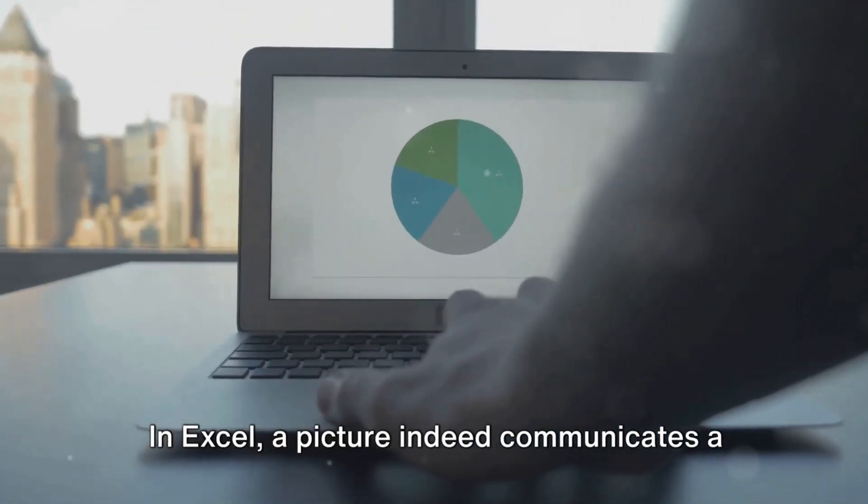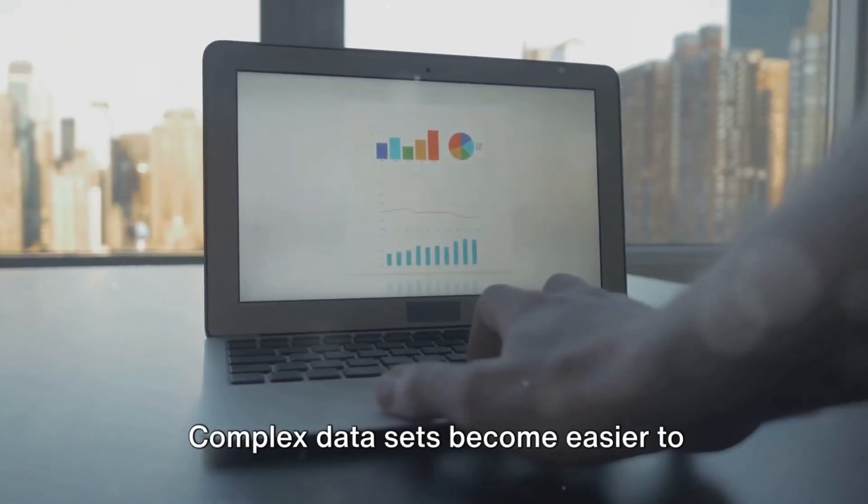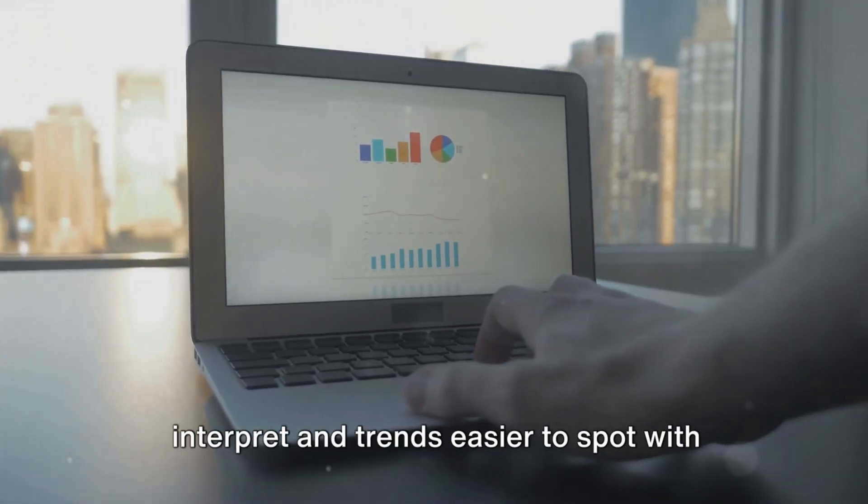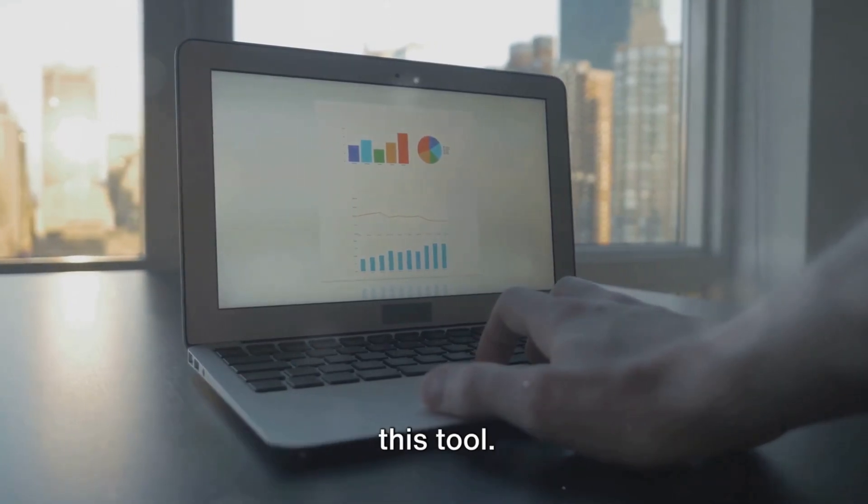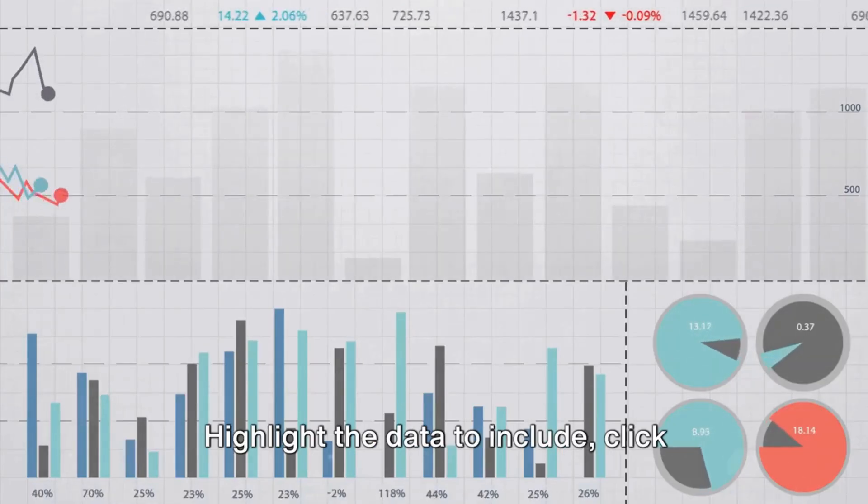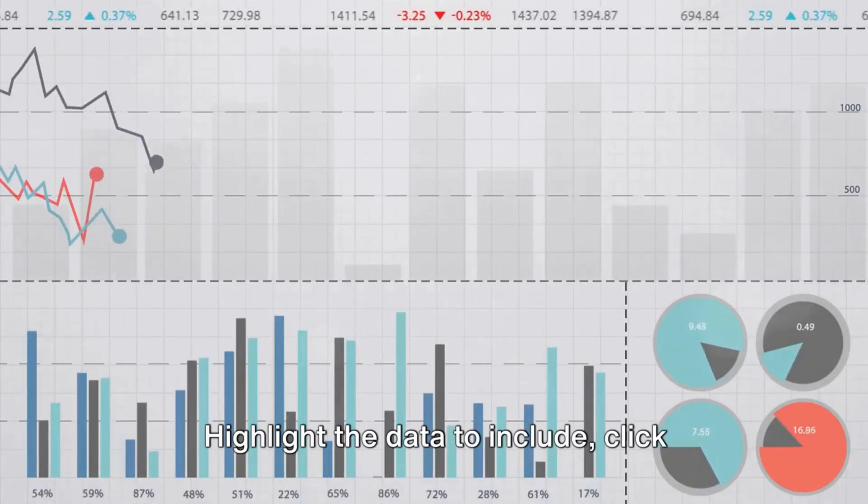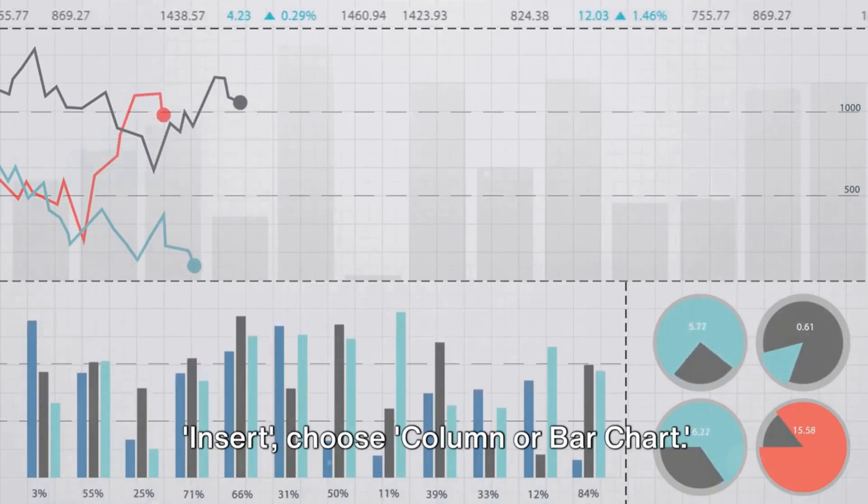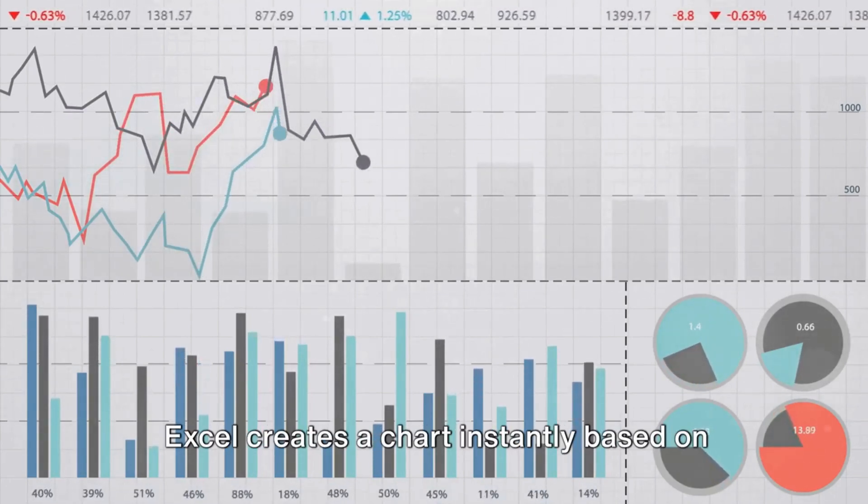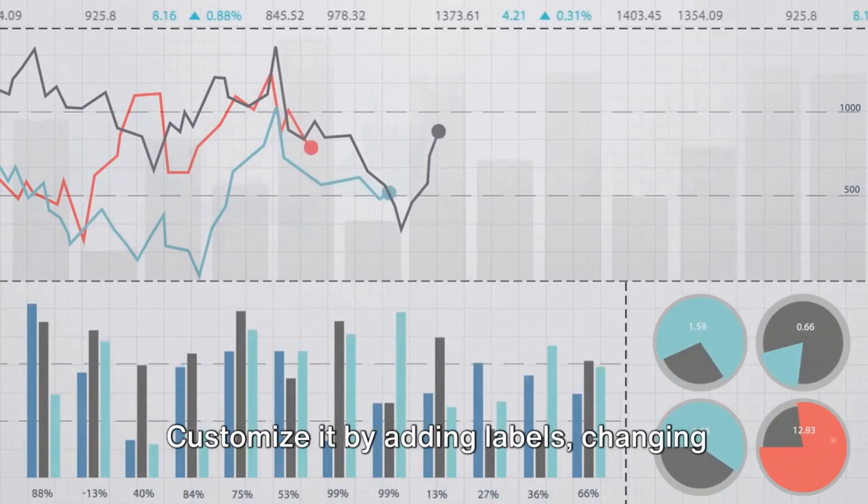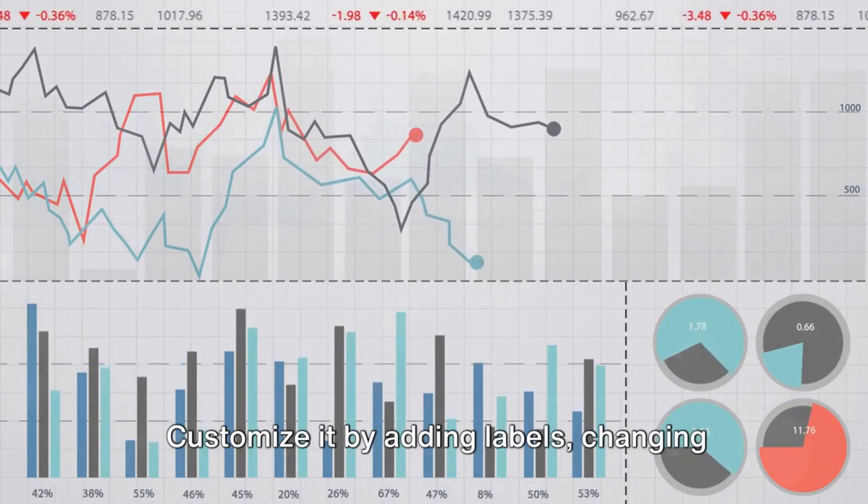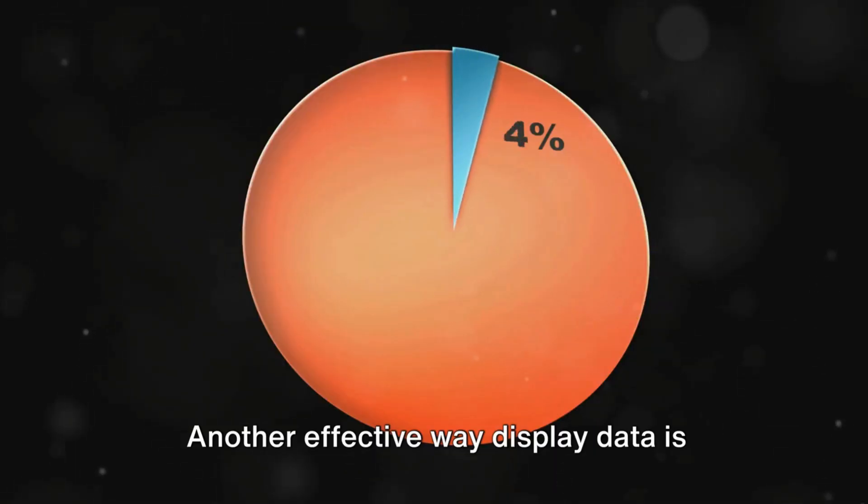Now let's visualize our data with charts and graphs. In Excel, a picture indeed communicates a thousand words. Complex data sets become easier to interpret and trends easier to spot with this tool. Let's make a bar chart: highlight the data to include, click Insert, choose column or bar chart. Excel creates a chart instantly.